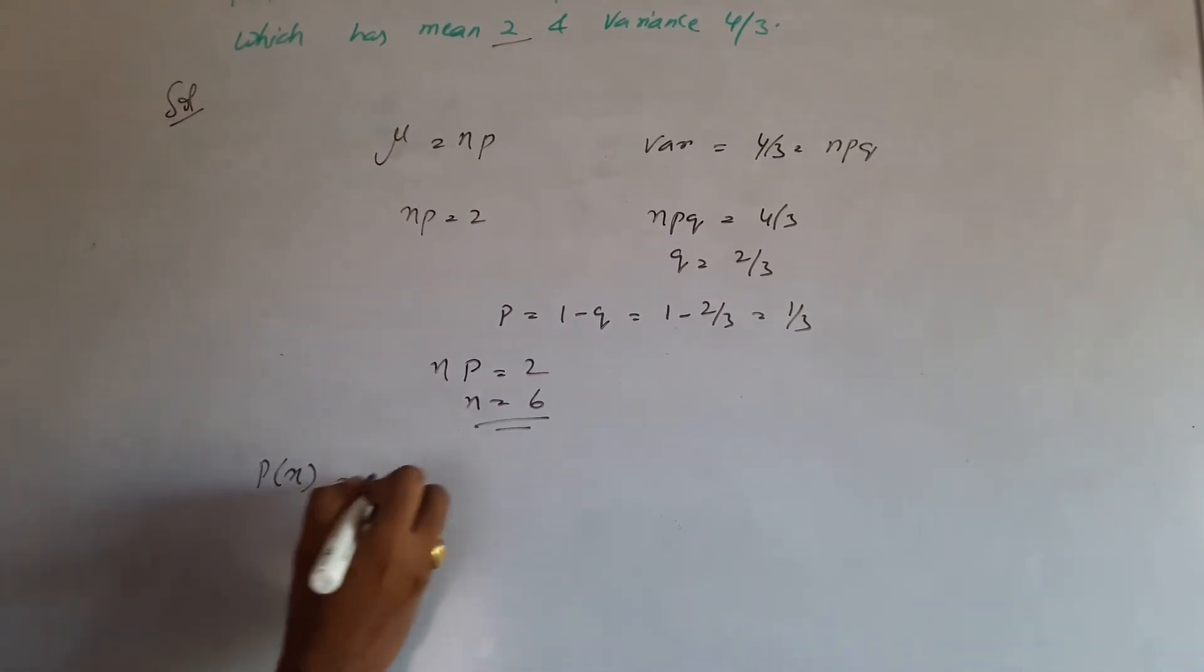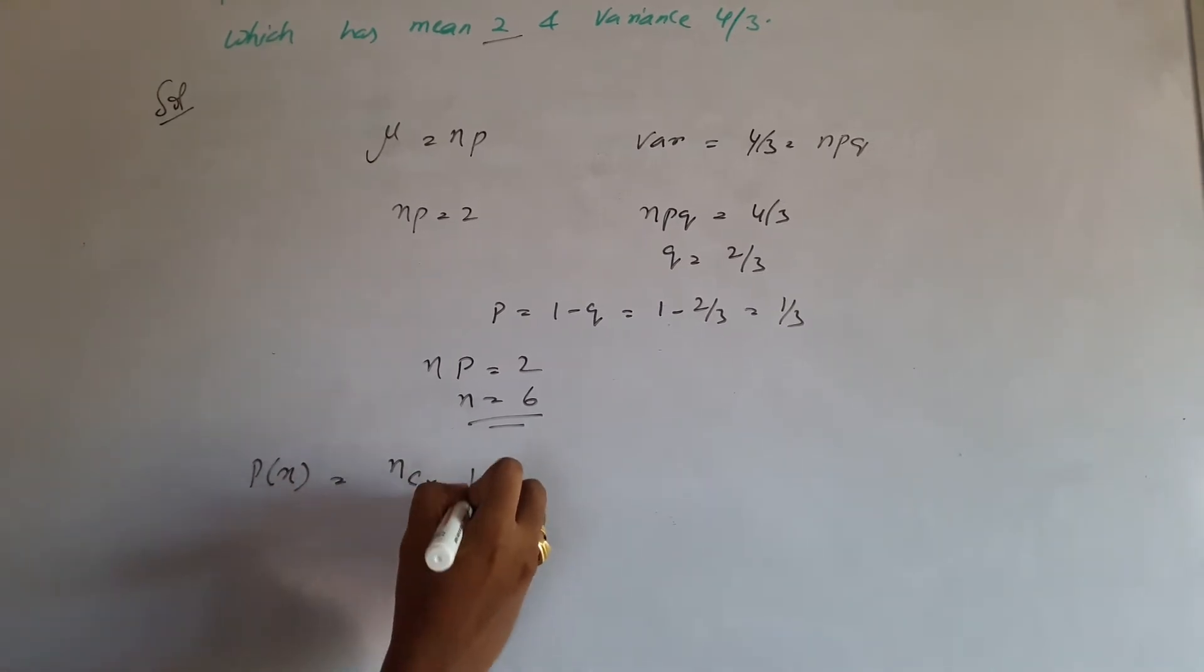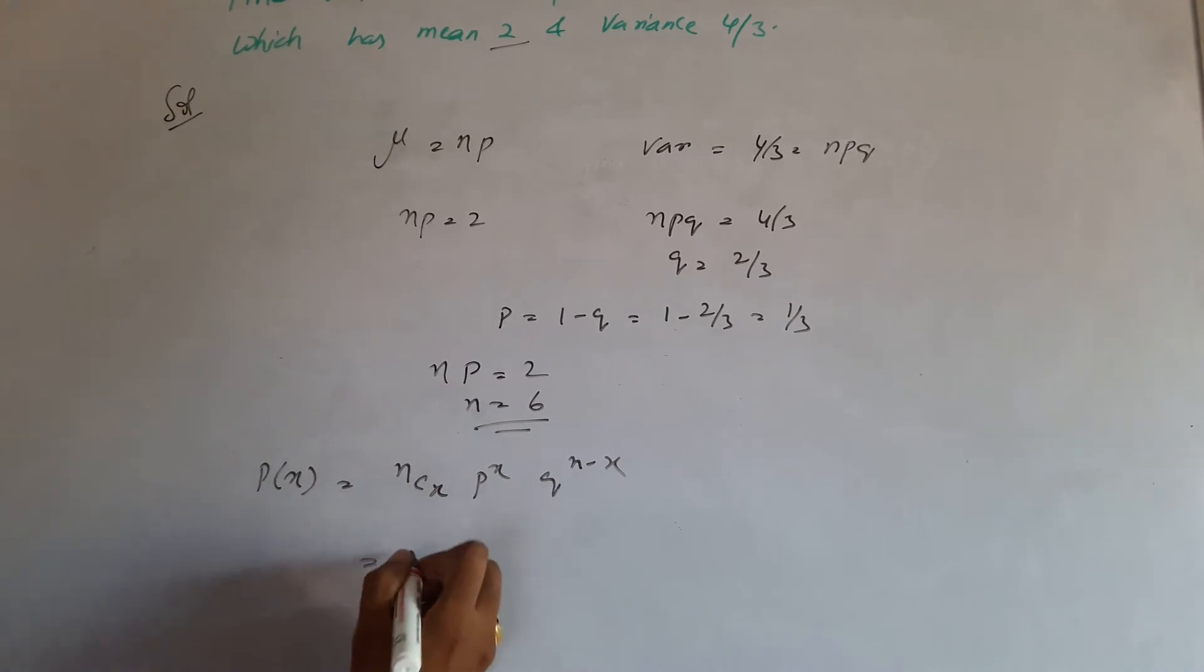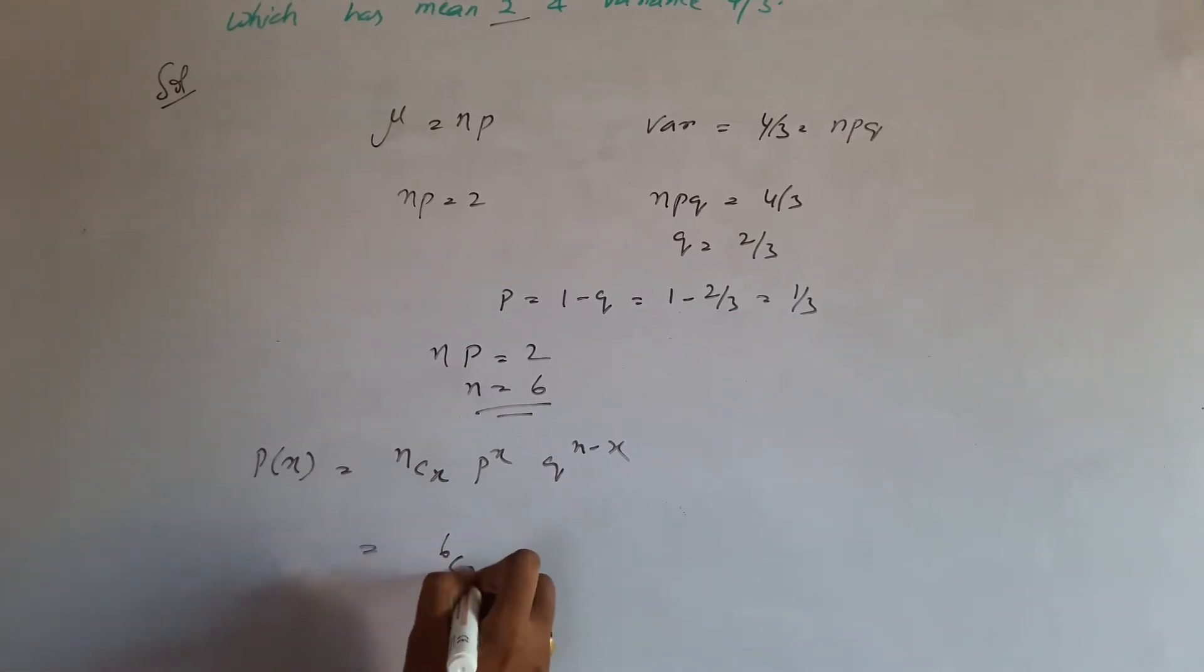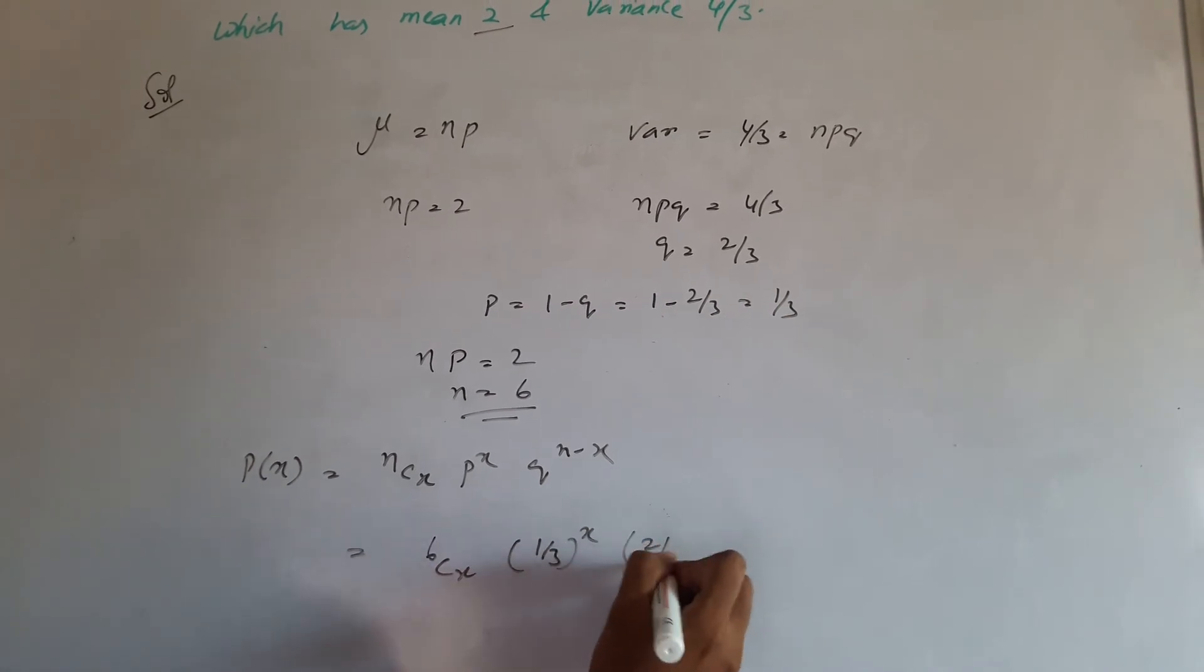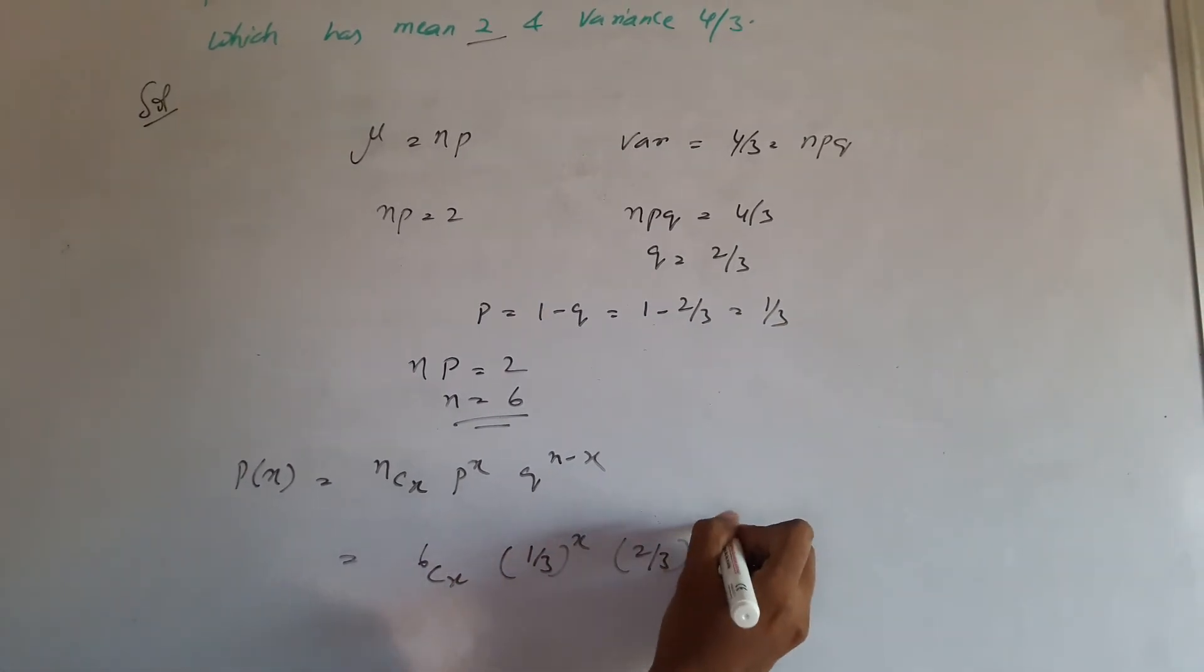You have p of x is equal to nCx times p to the power x times q to the power n minus x. Let us substitute that and get 6Cx times 1 by 3 to the power x times 2 by 3 to the power 6 minus x.